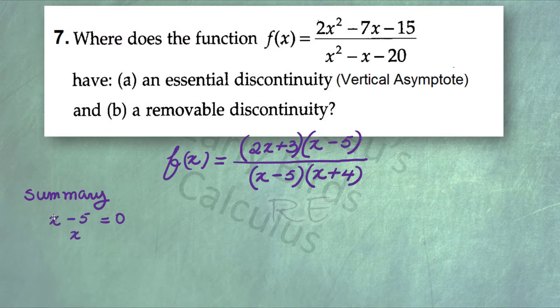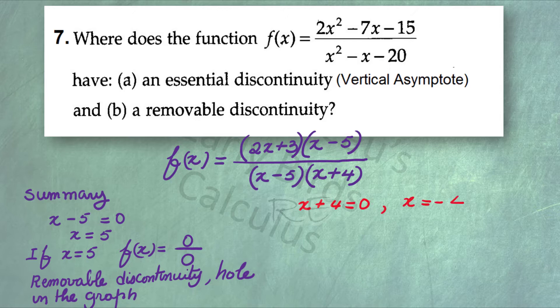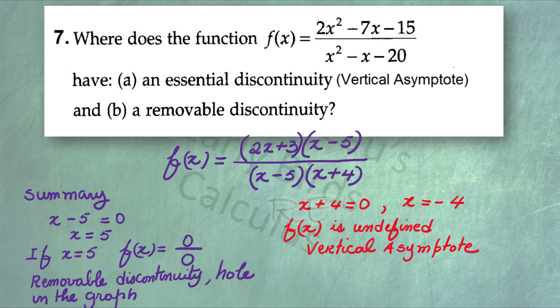In summary, x minus 5 equal to 0, where x is equal to 5, is the indeterminate form 0 over 0. It's a gap that is removable, so it's a removable discontinuity, also known as a hole in the graph. On the other hand, x plus 4 equal to 0, where x is equal to negative 4, is an essential discontinuity. It causes the graph to be undefined, which means you're going to have a vertical asymptote, a part of the graph that cannot be connected.